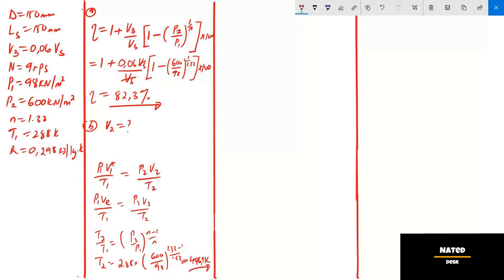Now that we calculated T2, the other unknown value is VE. So let's calculate effective volume VE. VE equals V1 minus V4. We don't have V1, but we can calculate it.